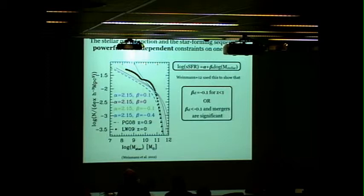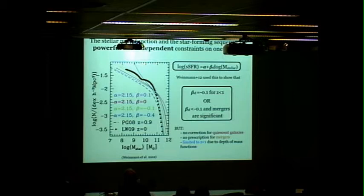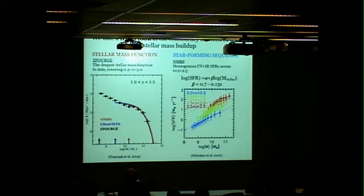This is important because measurements of the slope of the star forming sequence have been anywhere between basically negative 1 and 0 in this parameterization of specific star formation rate. But this was a very simple model. We can improve on it and extend it to higher redshift, and that's what we do here.